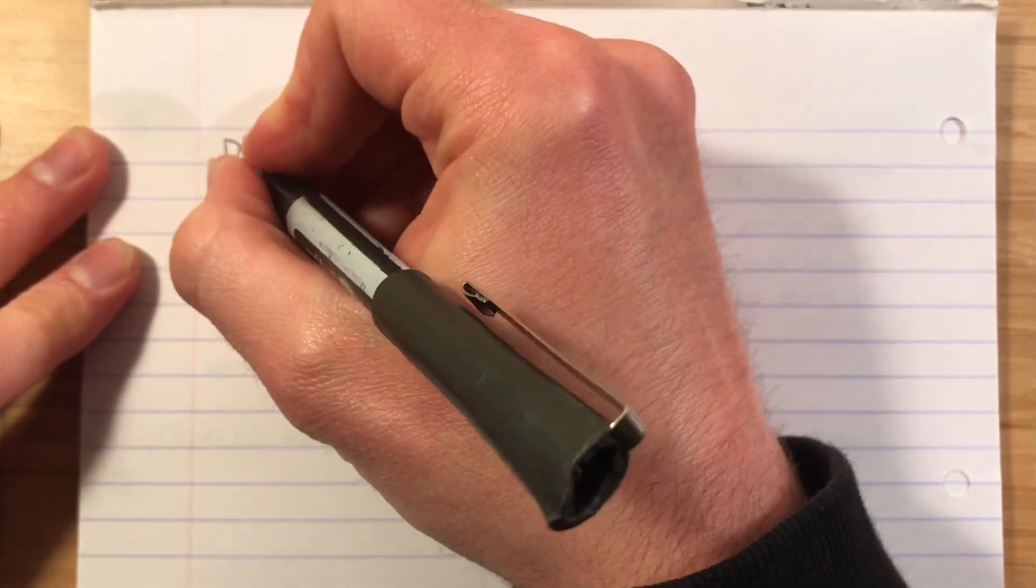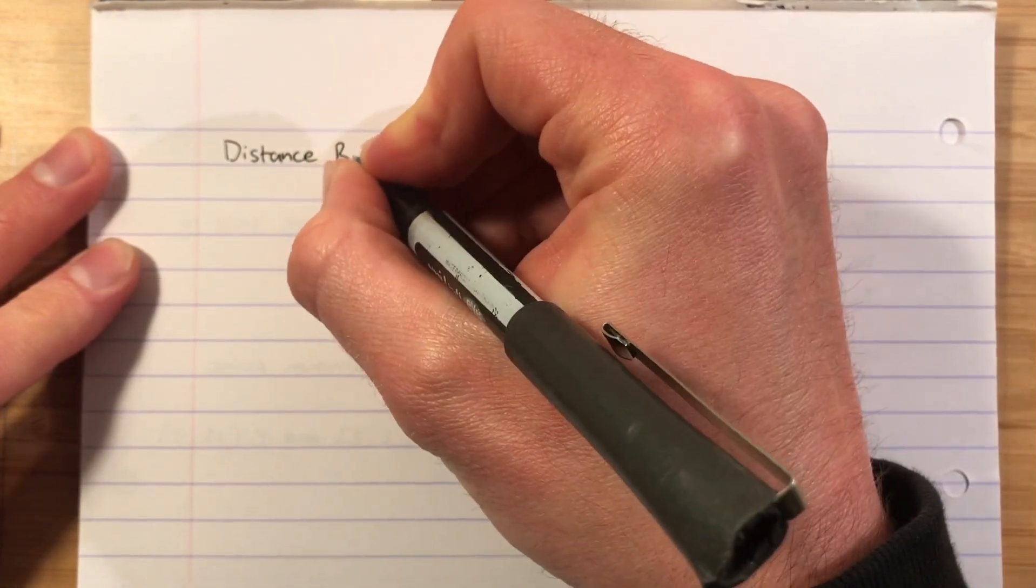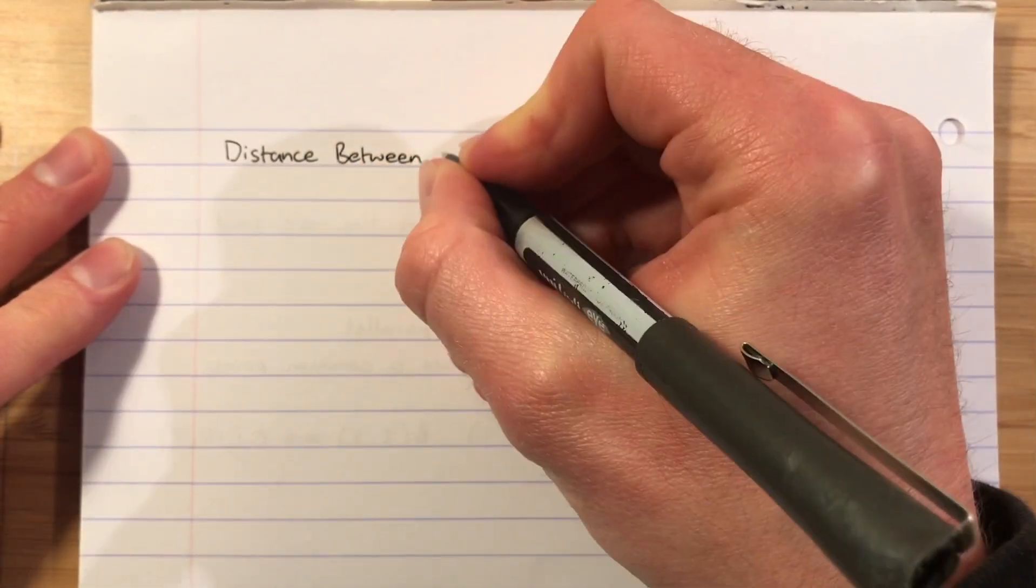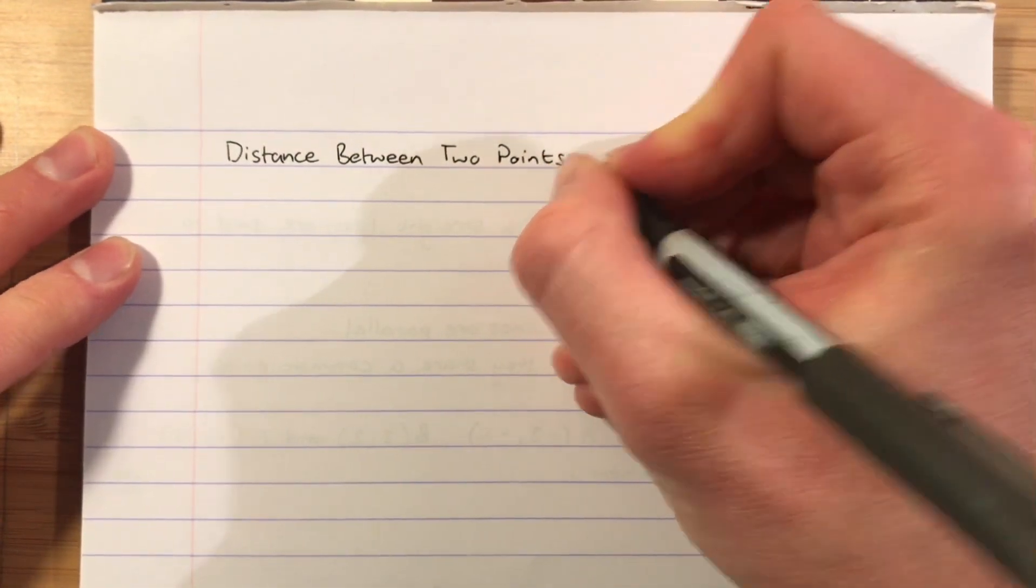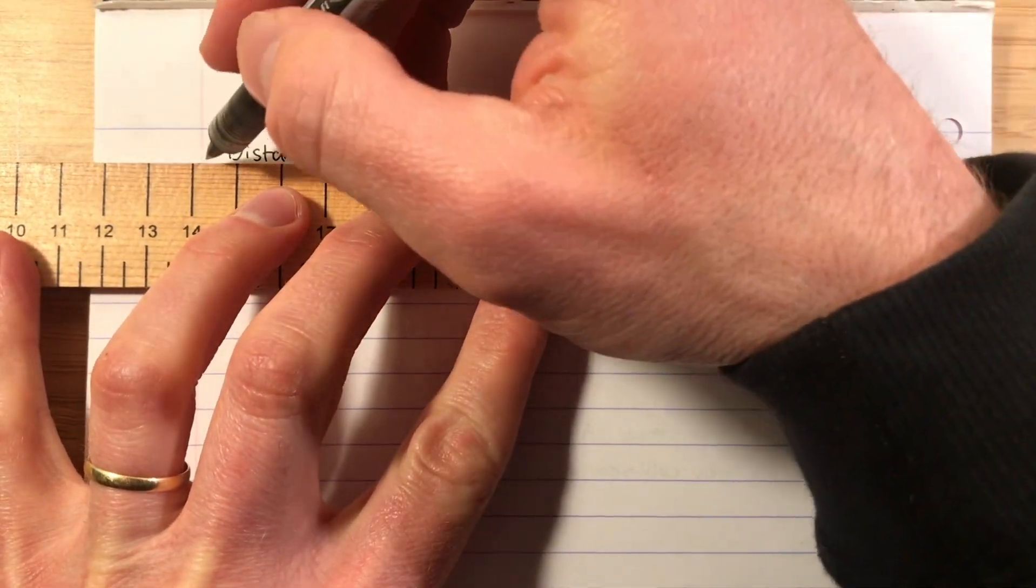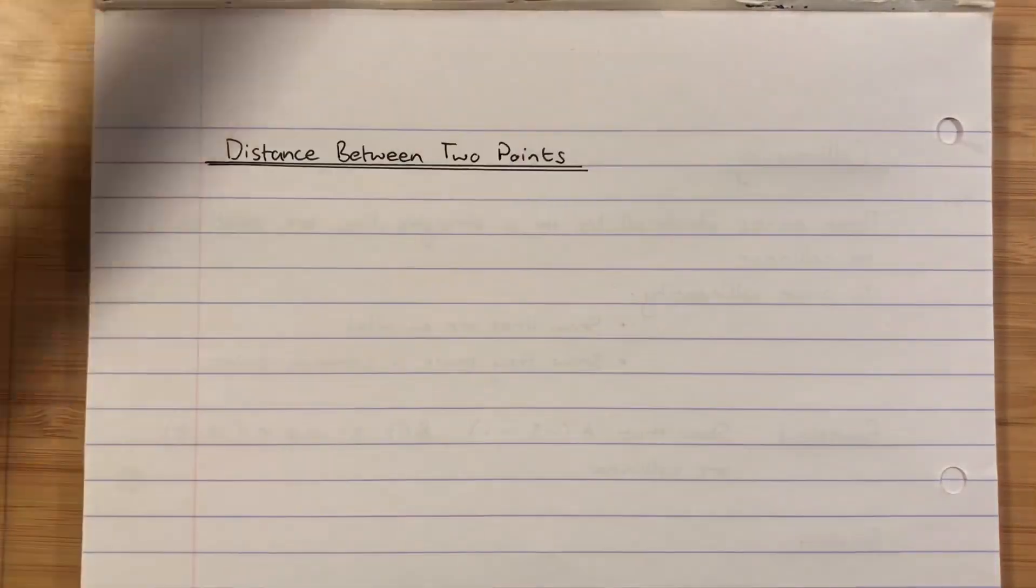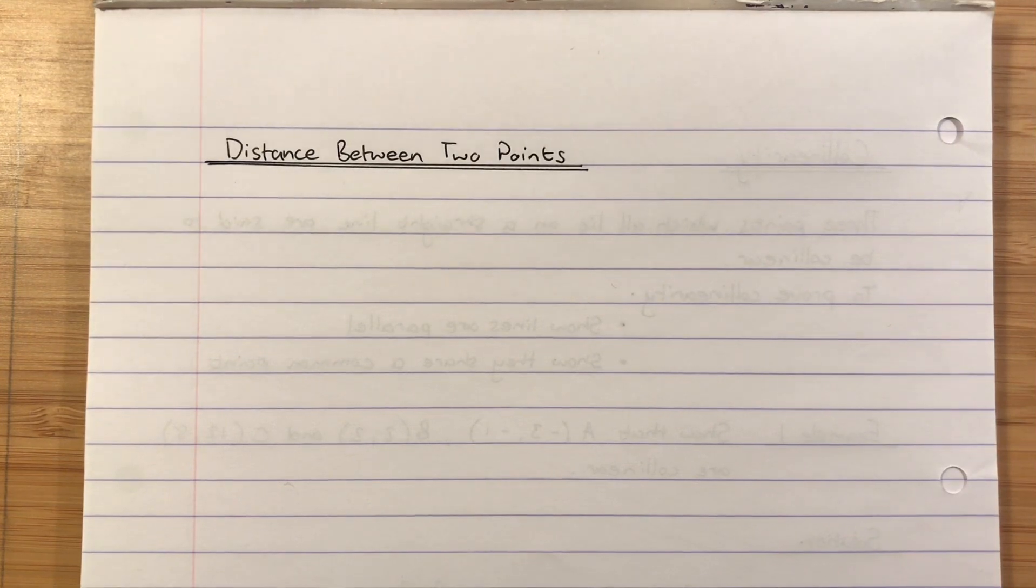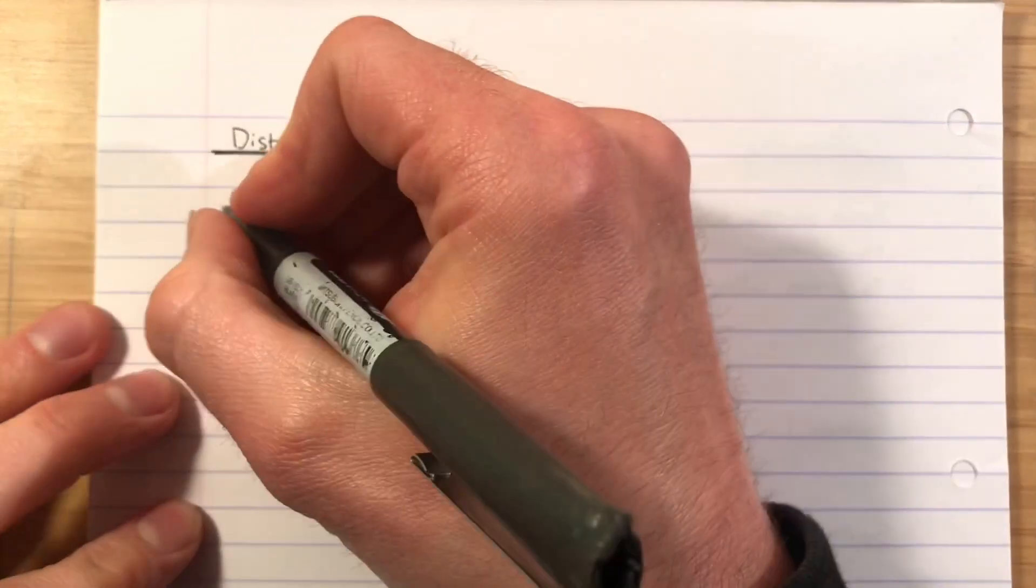So our subheading will be distance between two points, and as you know this is really just going to be a Pythagoras example. Now you will only get one mark for Pythagoras at higher maths, so don't be too pedantic about writing out every single stage of the work if you're confident you can do it mentally.